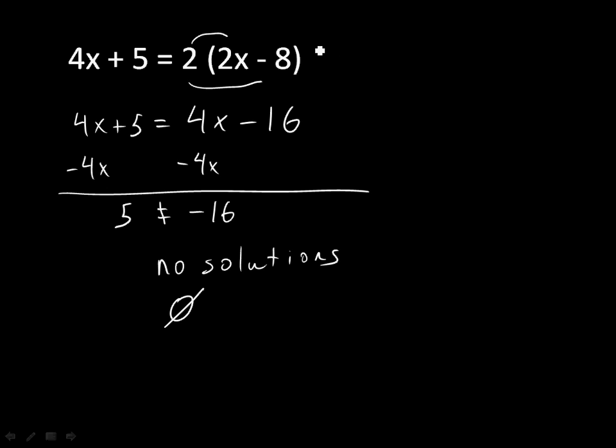So, to summarize this situation, you're solving a linear equation, you simplify each side, you get to a point where your variable disappears. When that happens, after you've checked your work, if it's a false statement, like 5 being equal to negative 16, clearly false, that means that equation has no solutions, or the solution set is the empty set.